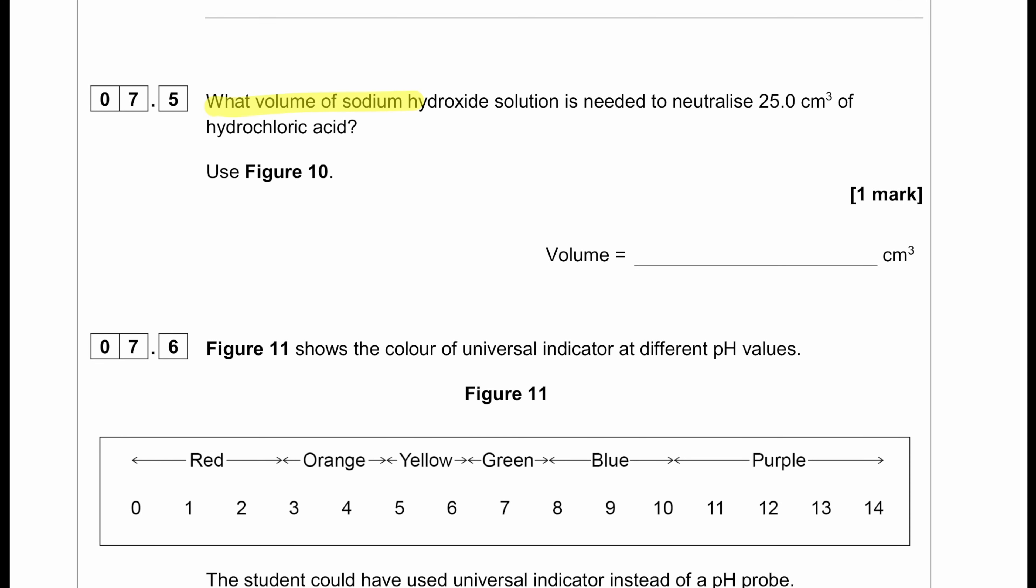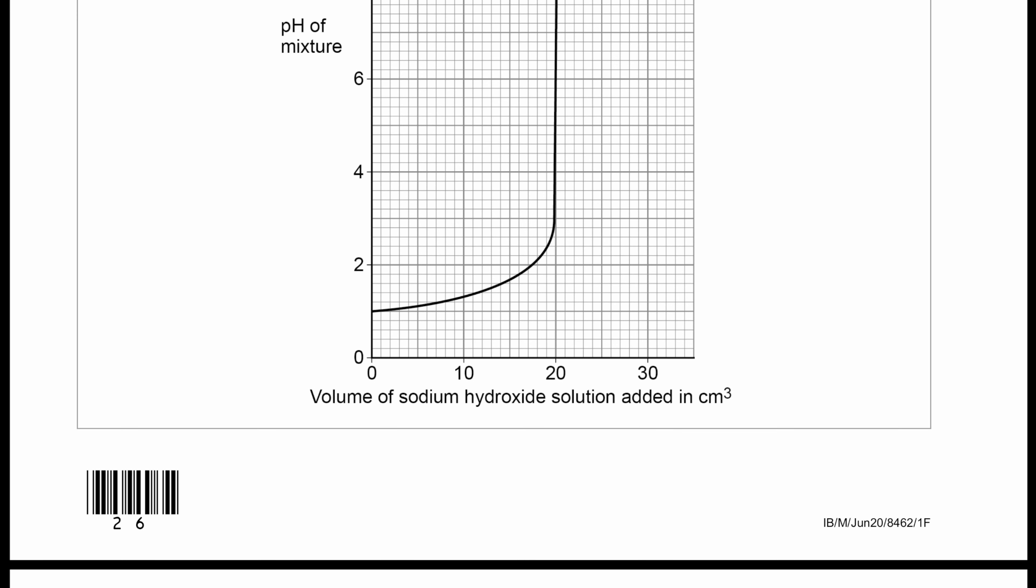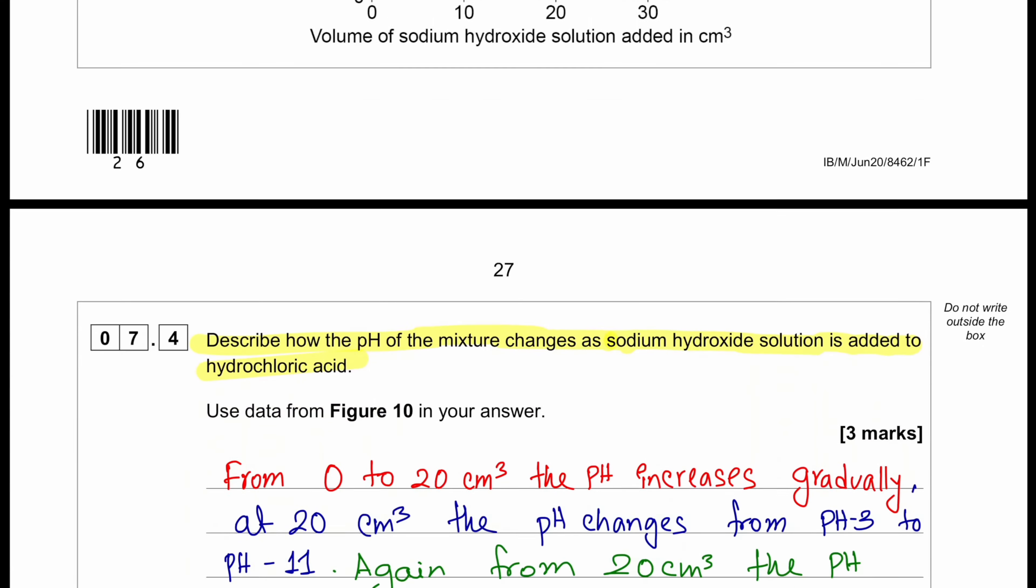What volume of sodium hydroxide solution is needed to neutralize 25 cm³ of hydrochloric acid? Neutralization occurs when the change in pH occurs very fast. So 20 cm³ of sodium hydroxide solution.